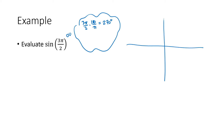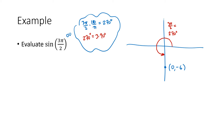So what does that angle look like? It's a positive angle, which means a counterclockwise rotation. 270 degrees is 3 times 90, and 90 is a quarter turn, so we're going three-quarters of a revolution counterclockwise. The terminal side is the negative y-axis. The definition says we can pick any point on that terminal side, so let's pick (0, −6).